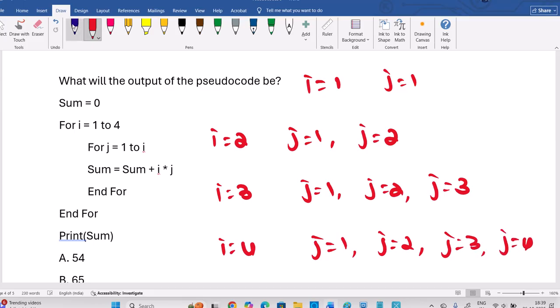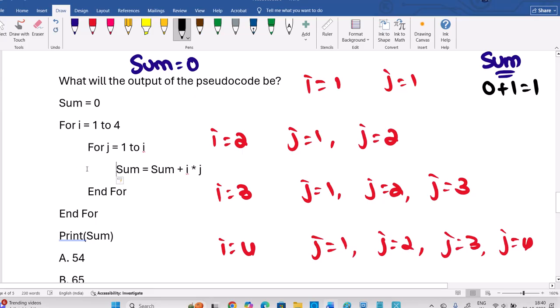Right? Now, what is this summation is initially 0. Sum is nothing but equal to 0. First, when I enter here, what will be sum affected is sum plus 0 plus 1 into 1. It will become 0 plus 1, nothing but 1. 1 into 1, I into J. Next, already 1 is there. 1 plus now 2 into 1. Right? This will be I into J, 2 into 1. Then 2 into 2 will be added to that. So this will be 4 plus 2, 6. 6 plus 1. 7 will be the result.